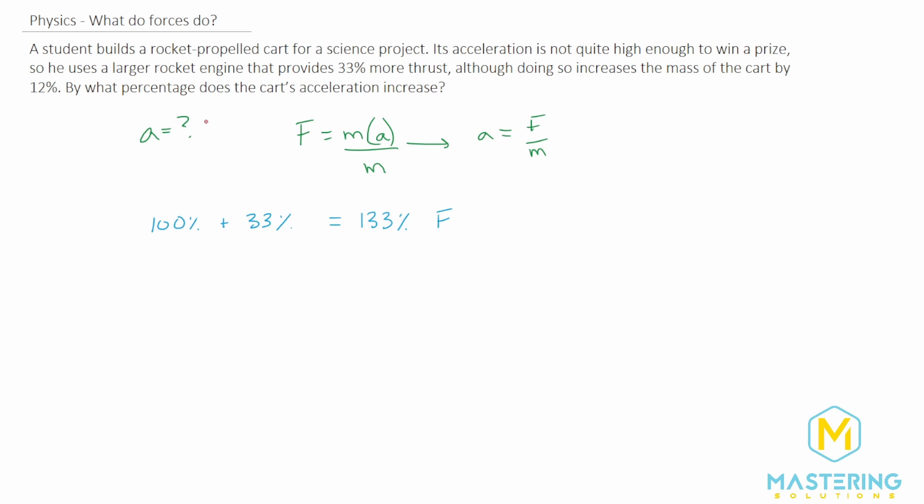Now they tell us though that when we do that we're using a larger rocket engine and so it's increasing the mass by 12%. So same thing, if we had the exact same mass, that would be 100% of the old mass, but it's 12% more. So the mass now is 112%. But we don't want a percentage, we want it in decimal form.